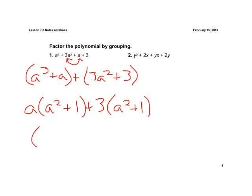So our answer in parentheses here, a squared plus 1. And if we factor those two things out, all we have left is an a plus 3. And that's in factored form. We can't factor anything else.